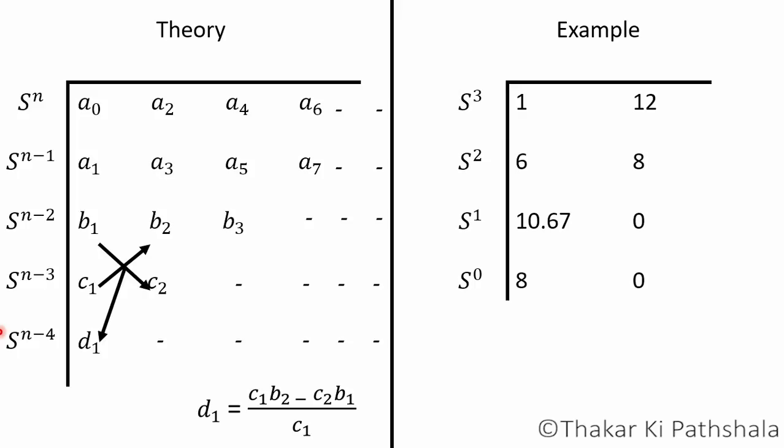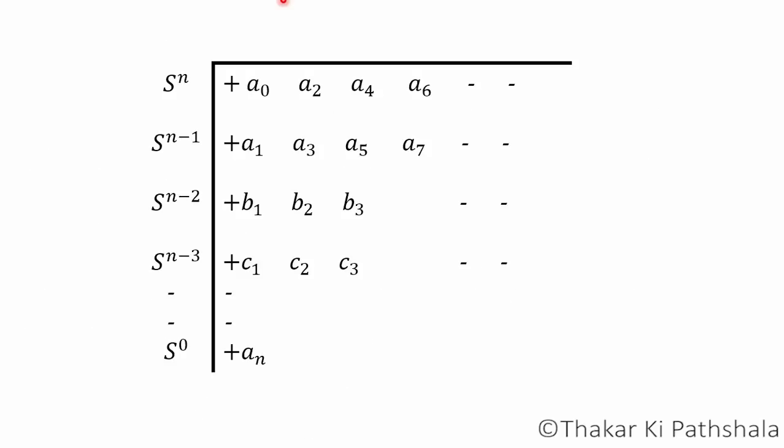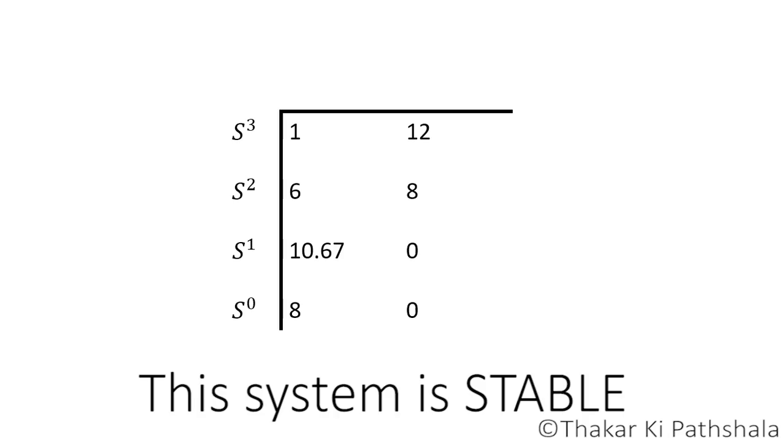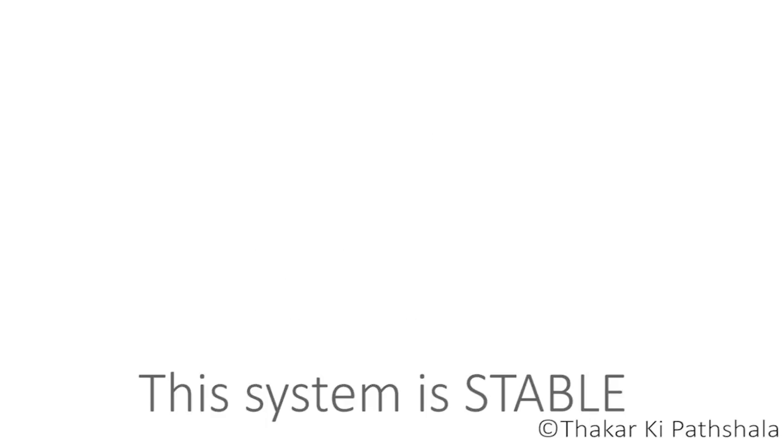To find out whether the system is stable or not, just remember one rule. If quantities in the first column do not change the sign, then the given system is stable. And if the quantities obtained in the first column change the sign, then the system is unstable. Here change of sign means that the sign should be consistent. Like if we are getting negative signs then all should be negative, and if we are getting positive signs then all should be positive. Here we do not see change of signs, we have got all the values positive, so the system is stable.